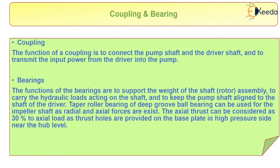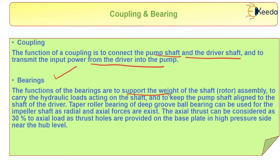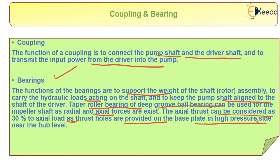The coupling is used to connect the pump shaft and driver shaft and to transmit input power from the driver to the pump. The bearing is used to support the weight of the shaft assembly, to carry hydraulic loads acting on the shaft, and to keep the pump shaft aligned to the driver shaft. Taper roller bearings or deep groove ball bearings can be used for the impeller shaft as both radial and axial forces exist. The axial thrust can be considered as 30 percent of the axial load, as thrust holes are provided on the base plate on the high pressure side near the hub level.